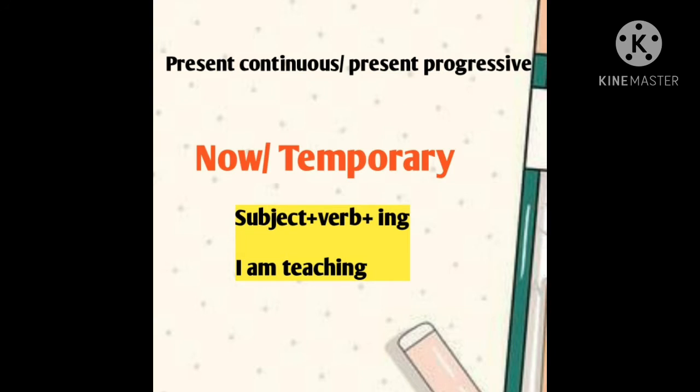Present continuous, or present progressive, is used for now or temporary actions. Temporary means an action happening at a particular moment. For example, it is raining outside — that is an action happening now. I am teaching now. I am going outside now. What I am doing right now — that is present continuous.